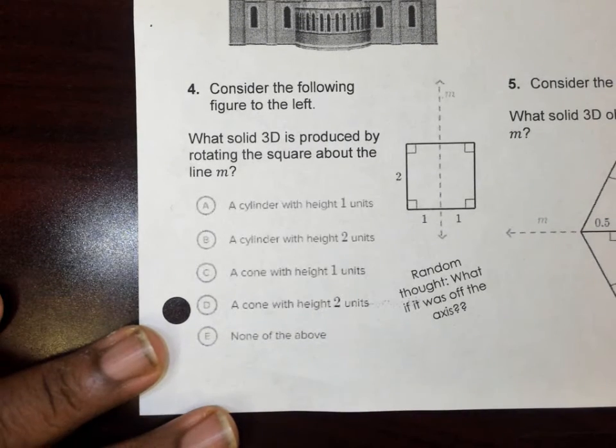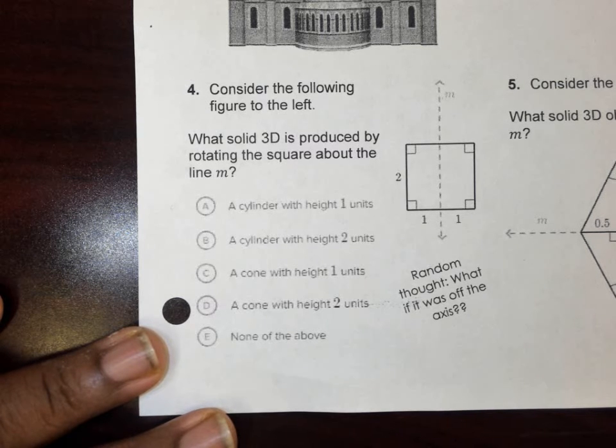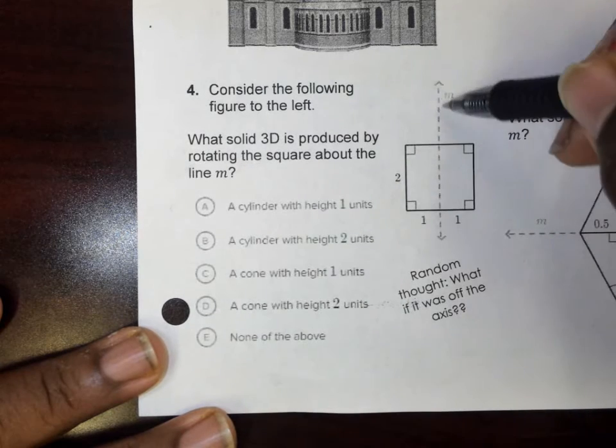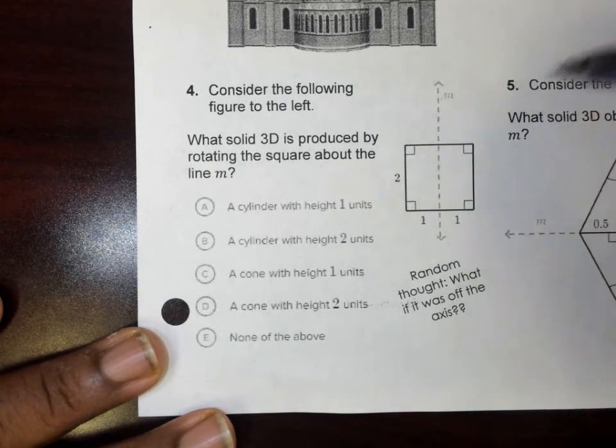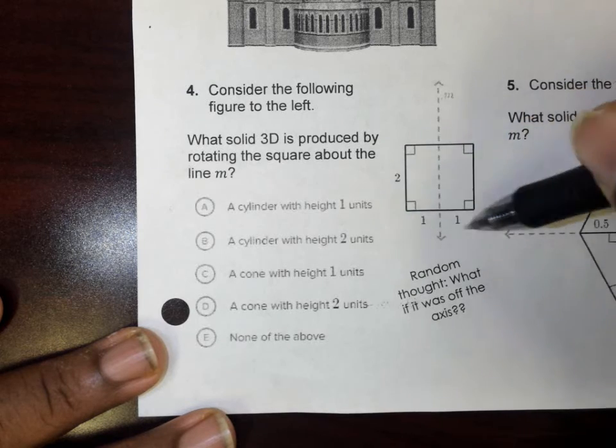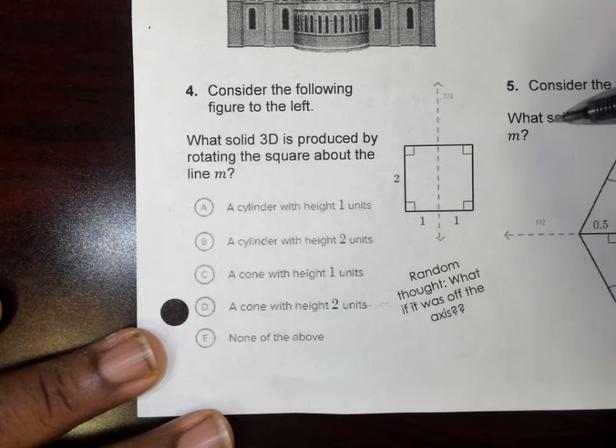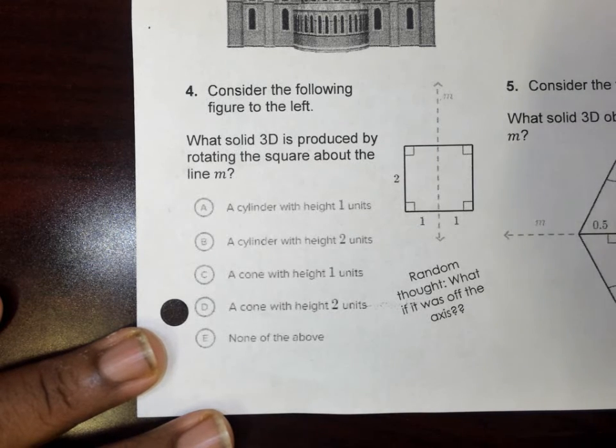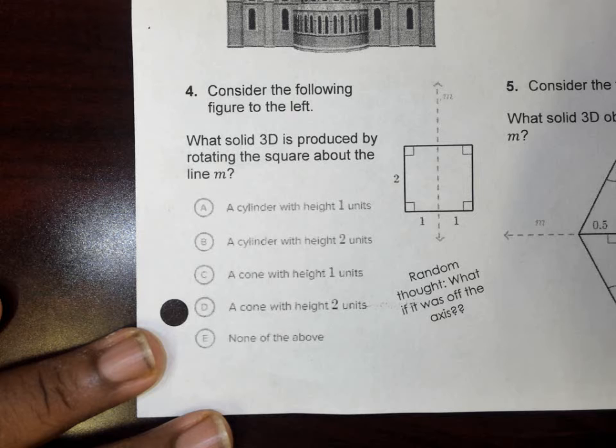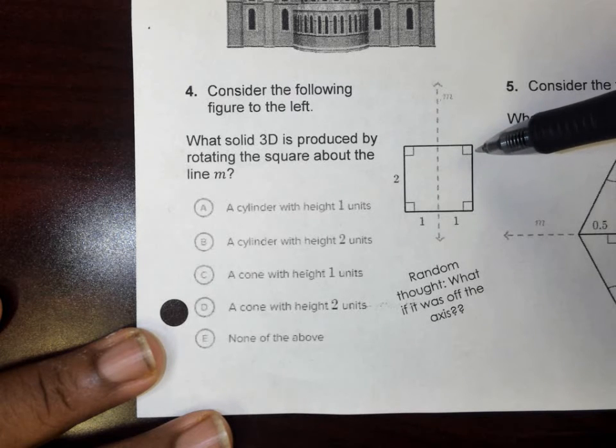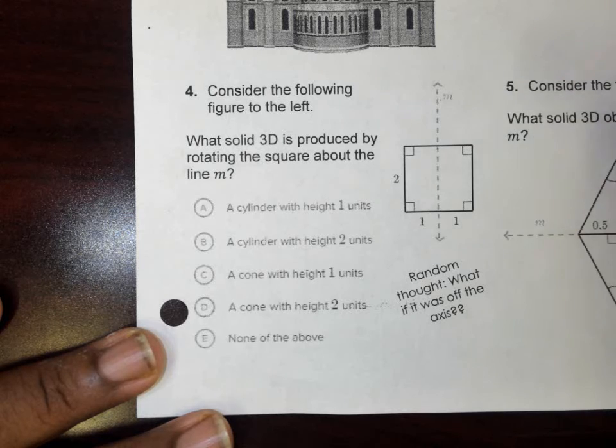Number four. Consider the figure to the right, not the left. What solid 3D is produced by rotating the square about the line M? So I got a line M here down the middle of my square. That's saying if I spin this figure, rotate it around this line, what solid 3D object would I create? This is what some of y'all have a hard time with because y'all don't have that good of imagination. Imagine me spinning this square just rapidly along this line in the middle right here. What 3D shape would I make?